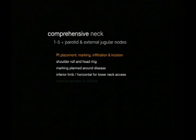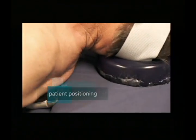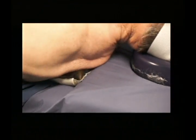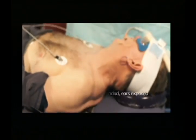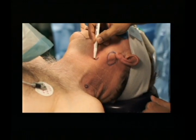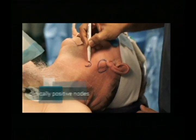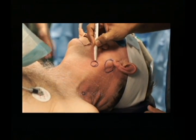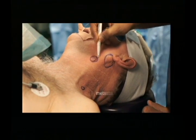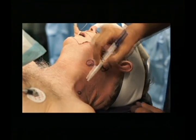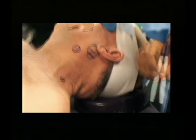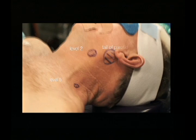The first thing I want to talk through is placement of the patient and marking. We like to have the patient positioned with a head ring and a shoulder roll. The shoulder is down, the ear is exposed. In this particular patient, the clinically positive nodes we've detected are in level 5, low in the neck, level 2, and a parotid node.